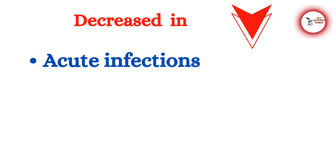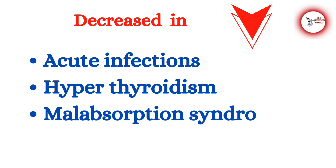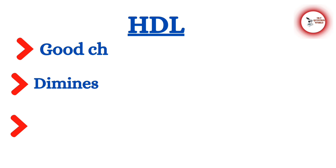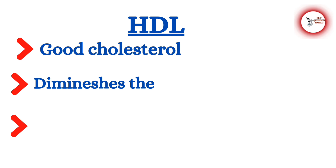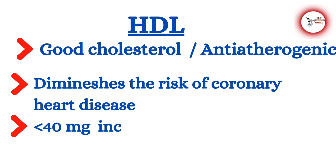Decreased cholesterol conditions include acute infections, hyperthyroidism, malabsorption syndrome, and hemolytic anemia. Next is HDL, or high-density lipoprotein, called the 'good cholesterol' or anti-atherogenic factor. HDL diminishes the risk of coronary heart disease; a level less than 40 mg/dL increases the risk of coronary heart disease.